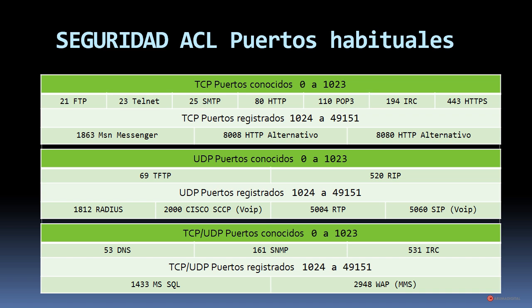Vamos a repasar los puertos habituales, ya que son bastante importantes a la hora de trabajar con las ACL extendidas. Puertos conocidos TCP, del 0 al 1023: 21 FTP, 23 Telnet, 25 SMTP, 80 HTTP, 110 POP3, 194 IRC y 443 HTTPS. También tenemos puertos registrados TCP, del 1024 al 49.151, donde encontramos el 1863 MSN Messenger, el 8008 HTTP alternativo y el 8080. Puertos conocidos UDP del 0 al 1023: 69 TFTP, 520 RIP.